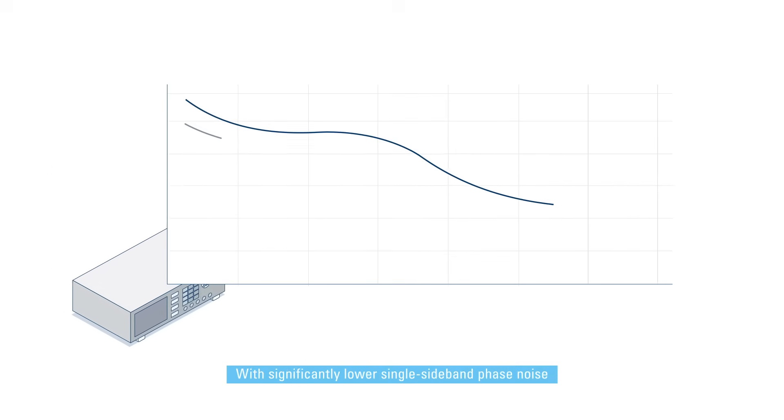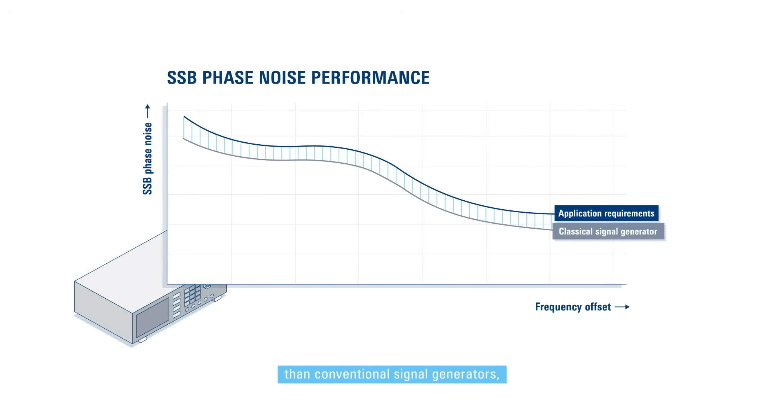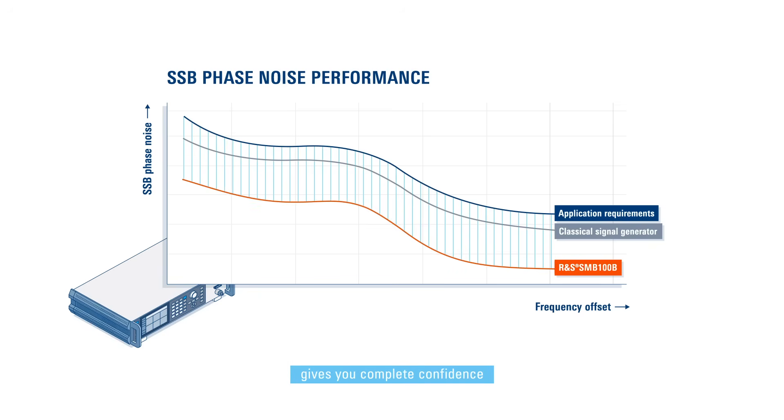With significantly lower single sideband phase noise than conventional signal generators, the SMB100B Microwave Signal Generator gives you complete confidence in the results you get from your device under test.